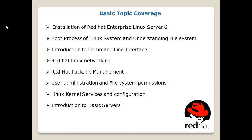Within this courseware I have divided the content into two parts: basic topic coverage and advanced topic coverage. The basic topic coverage involves installation of Red Hat Enterprise Linux server — the different ways to install servers and hardware requirements. Then the boot process of the Linux system and the file system, meaning how the Linux system boots up. I am going to take it from zero level and advance simultaneously, video by video. Then there is introduction to the command line interface, Red Hat Linux networking and package management, user administration, file system permissions, Linux kernel services and configuration, and introduction to basic servers.